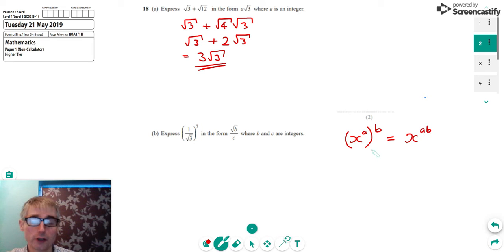And if we look at a real number example, let's imagine we had x to the power 2 to the power 3, we'd multiply the 2 and 3 together, and that would give us 6. So we get x to the power 6. So we can do that to this 1 over root 3.